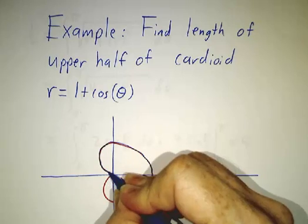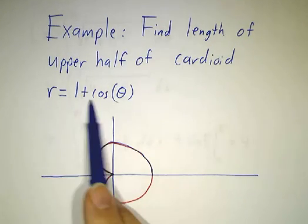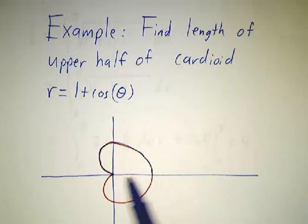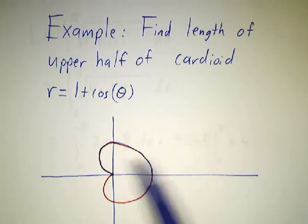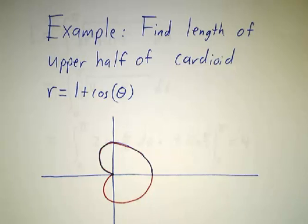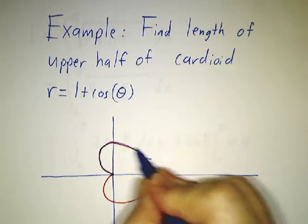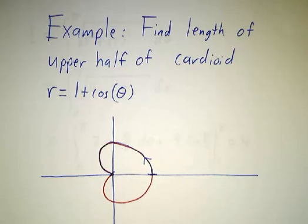And now I've written the cardioid sideways. I've written it as r equals 1 plus cos θ instead of the usual r equals 1 plus sin θ. So instead of having an upside down heart, we have a sideways heart. And we're figuring out everything from here all the way to here. So we're going to integrate as θ goes from 0 to π.